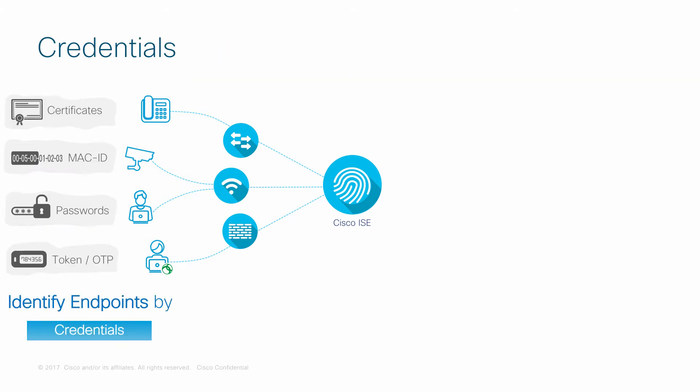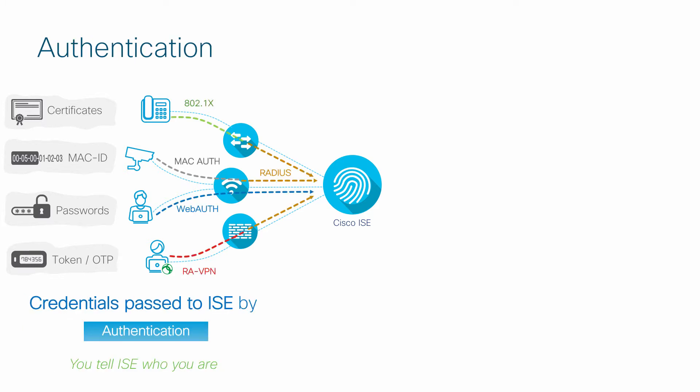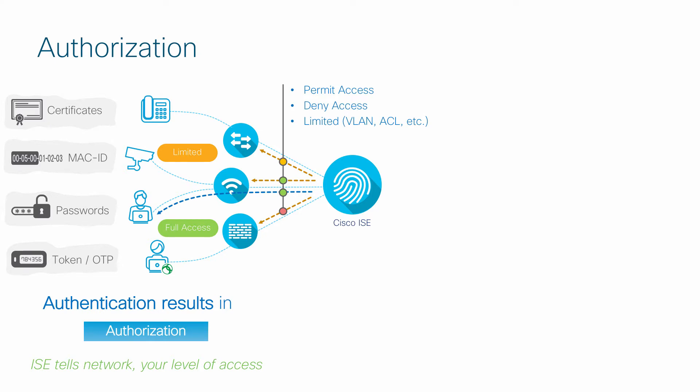How do we identify these endpoints? With the help of credentials — this can be passwords, certificates, tokens, or at the least the endpoint's MAC address. These credentials reach ICE in a process called authentication. There are various authentication protocols that an enterprise can use depending on the type of network and the type of endpoints. Essentially, with authentication you tell ICE who you are. Authentication typically ends with an authorization, so once you reveal your identity to ICE, ICE determines what must be your level of access.